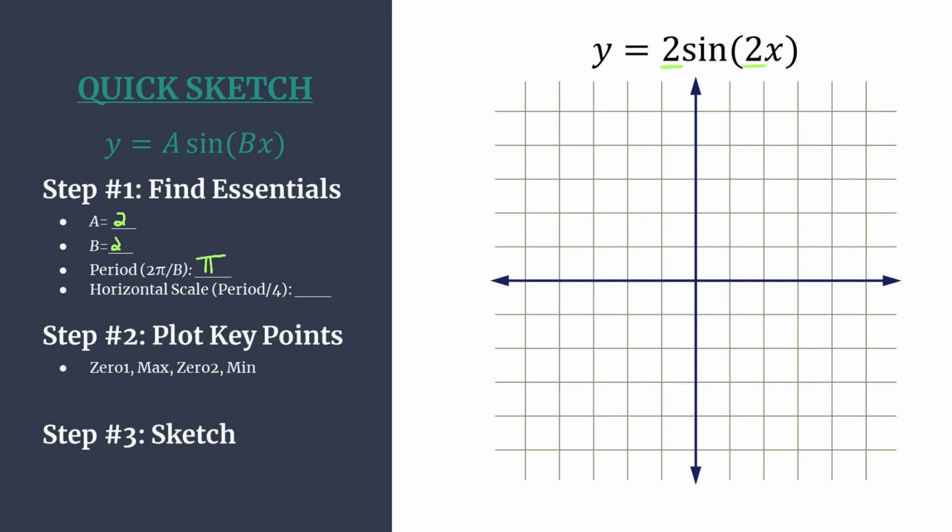Now we're going to set the horizontal scale for our graph very intentionally. Take your period and divide it by 4. So π divided by 4 is π over 4. We do that so that each of our key points in the next step aligns with a horizontal tick mark.